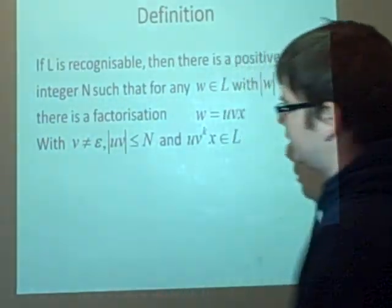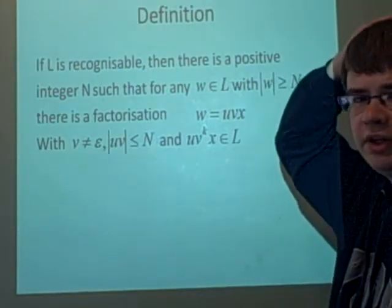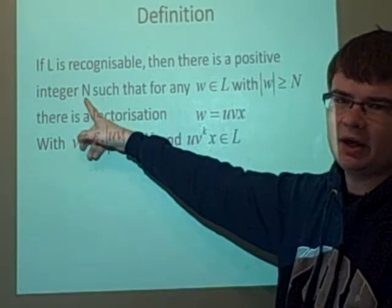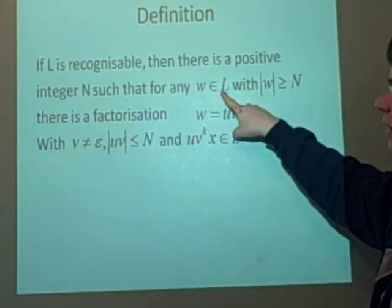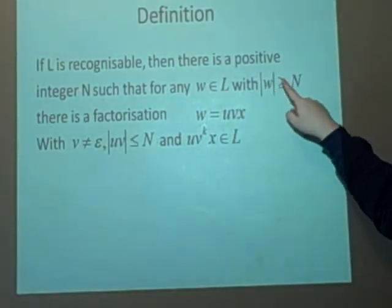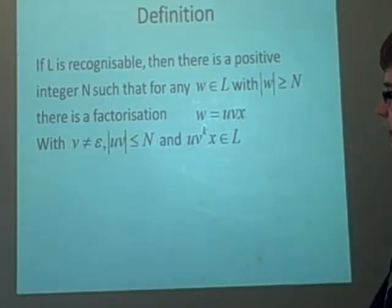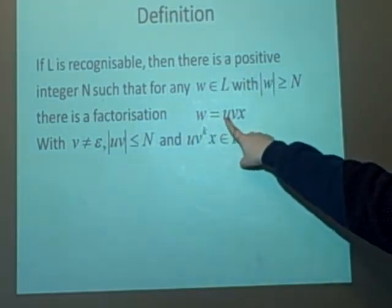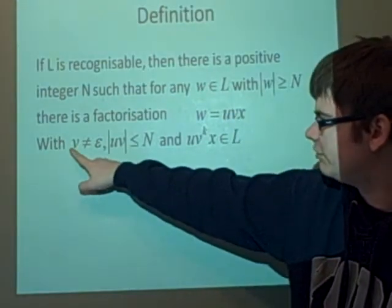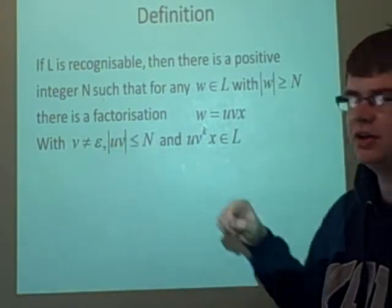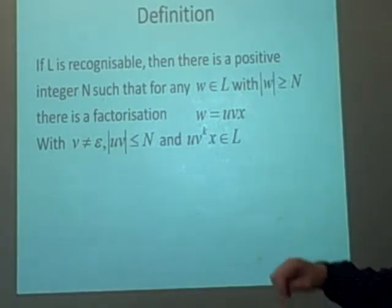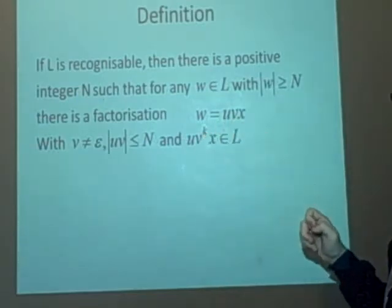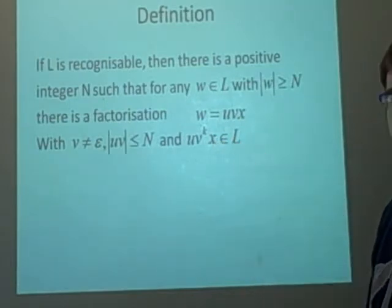Right, now for the actual pumping lemma. This is a method for finding if something's recognizable. So if L is our language, if that is recognizable, and there's a positive integer big N, this is our pumping length, then for any word in the language with the size of the word greater than or equal to N, these are the conditions you need to satisfy. Then there's a factorization. This isn't unique, you can do it all sorts of ways, where the word can be divided into U times V times X, with these conditions: that V is not the empty set, and the size of U times V is less than or equal to N. And then, if it's recognizable, then it will satisfy U times V to some power, any power, times X will have to be an element of the language.